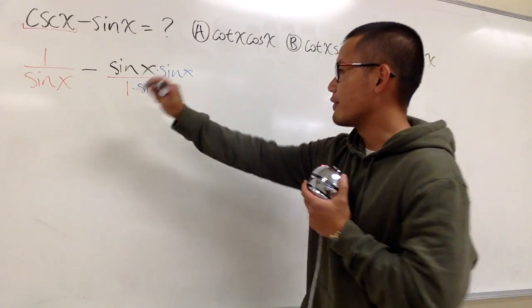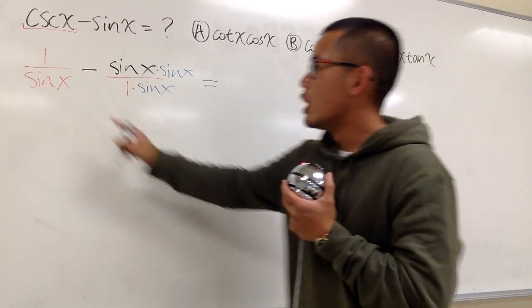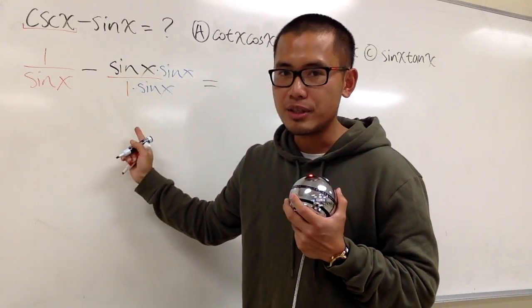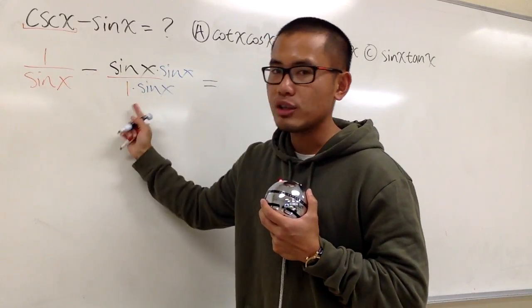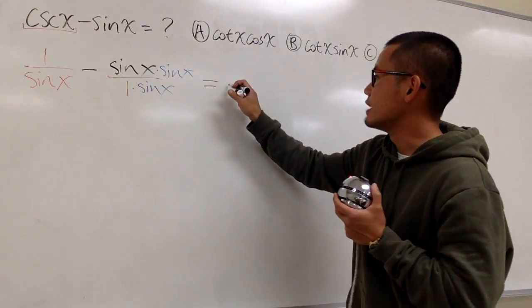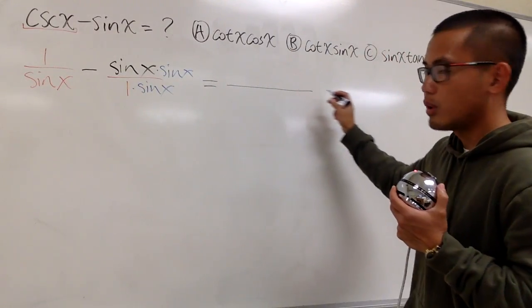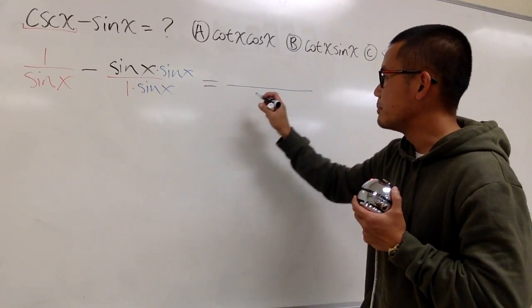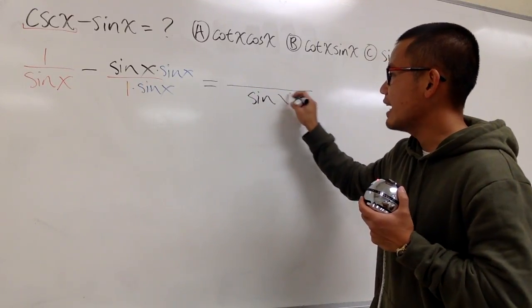And now, after we have done that, we see both of them have the same denominator, and when we subtract fractions, we know the denominator will stay the same. So let's put that down altogether over the same denominator, sin x.